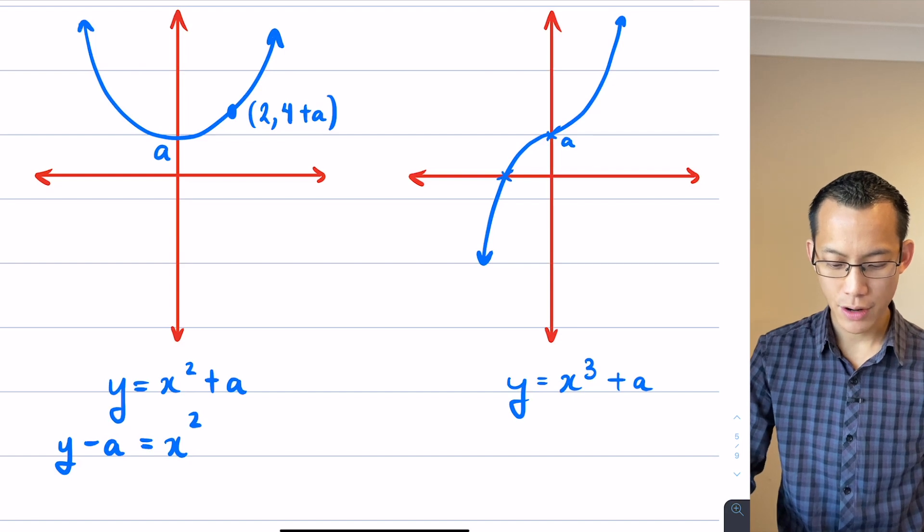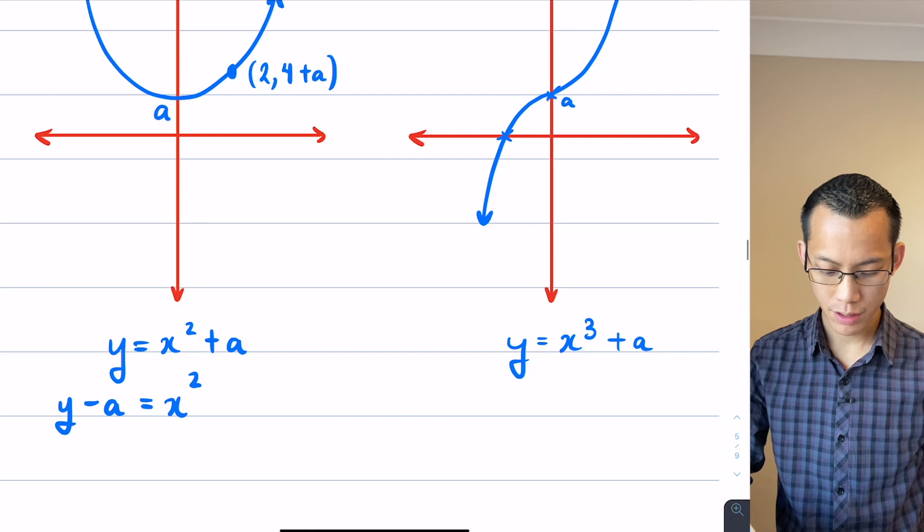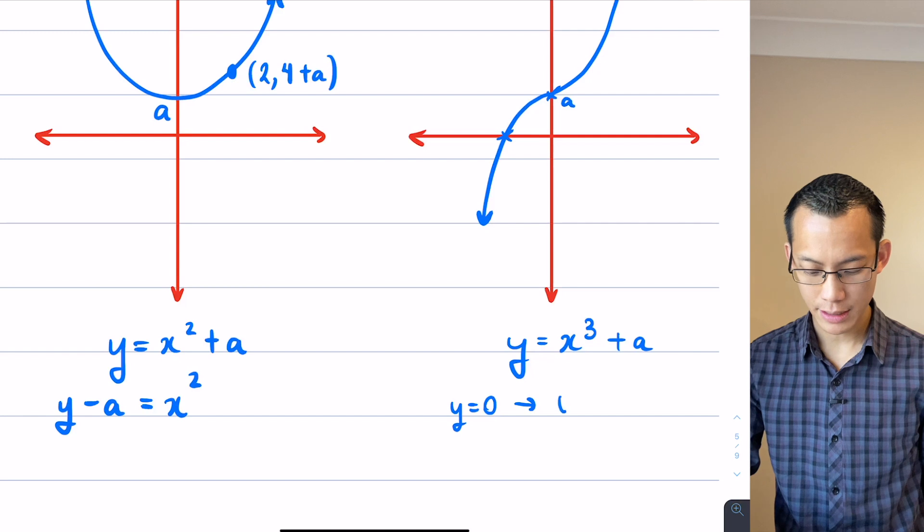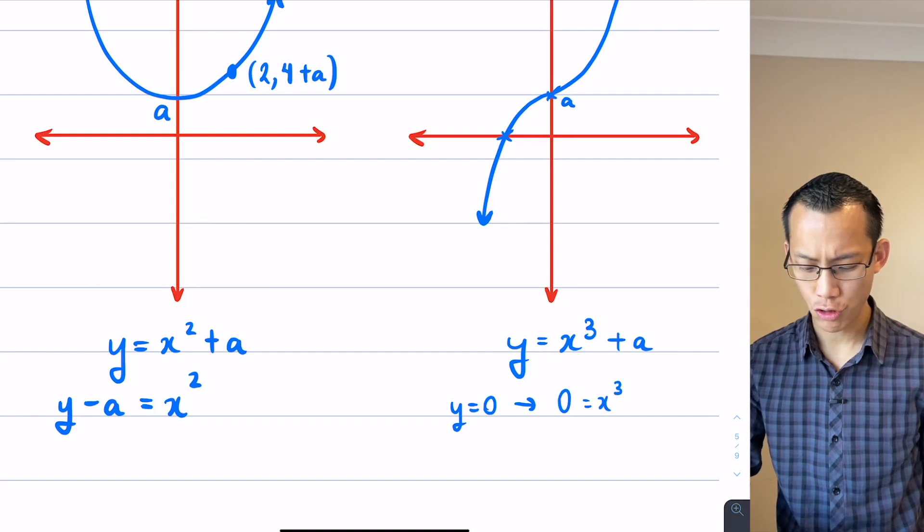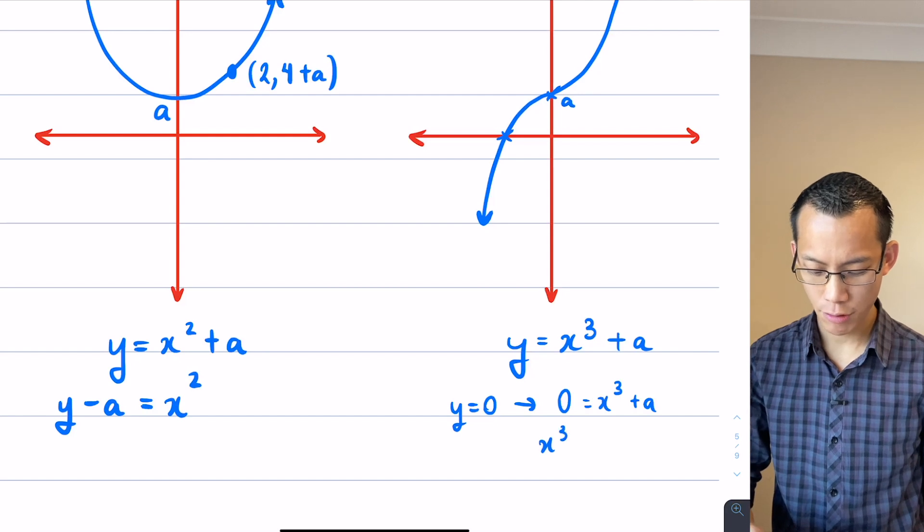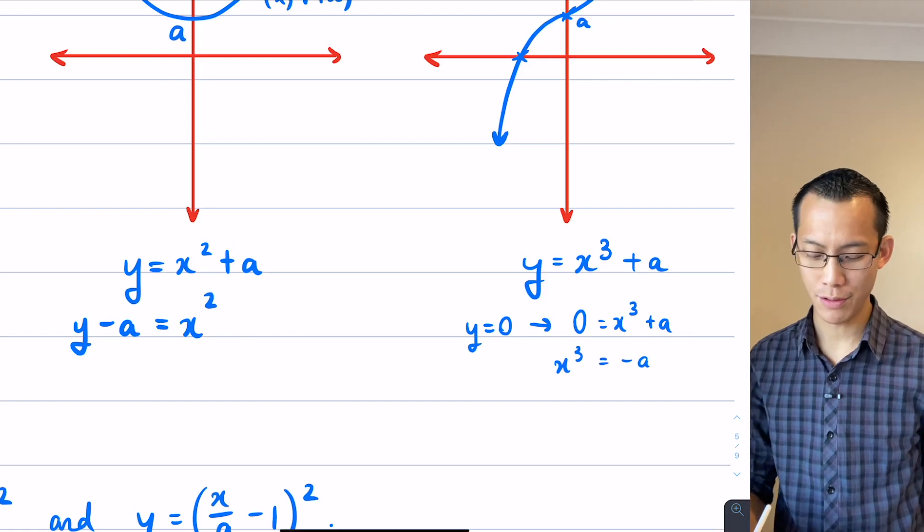And if I go ahead to try and find my x intercept here, I'm going to let y equals 0. So if I say y equals 0, try and find an x intercept now, I get 0 equals x cubed plus A. X cubed will therefore equal negative A, subtracting A from both sides and moving things over onto the other side.